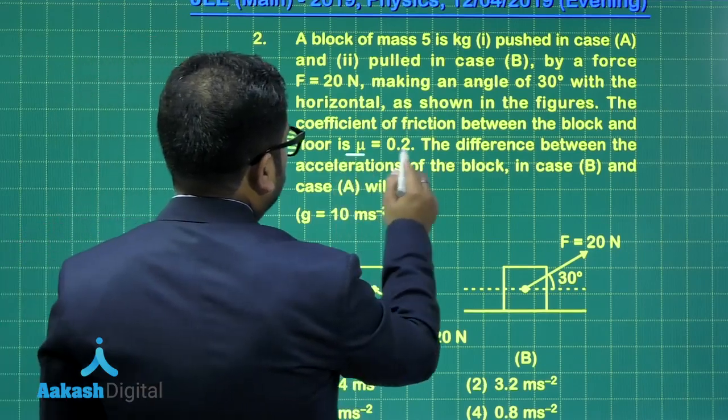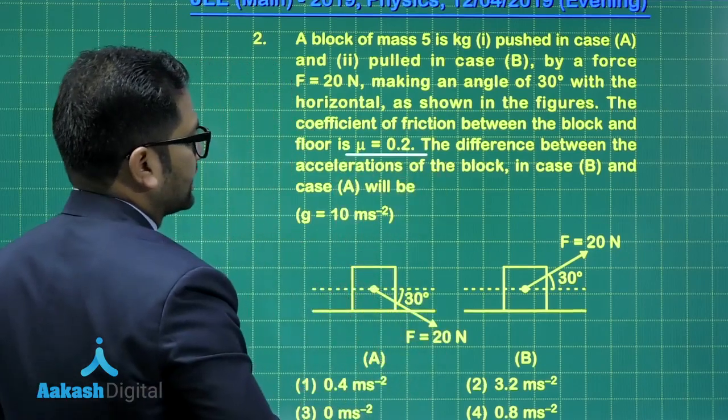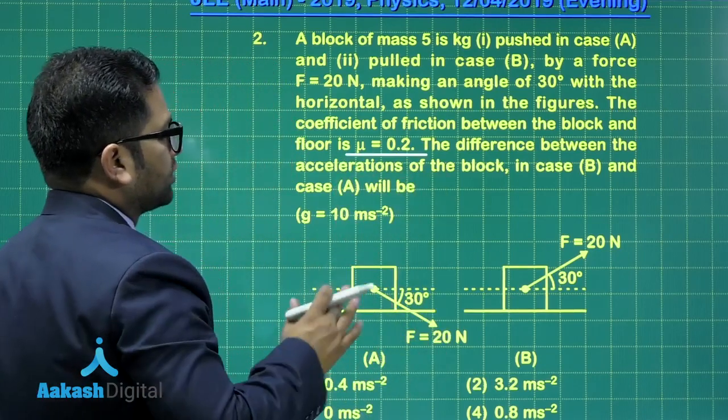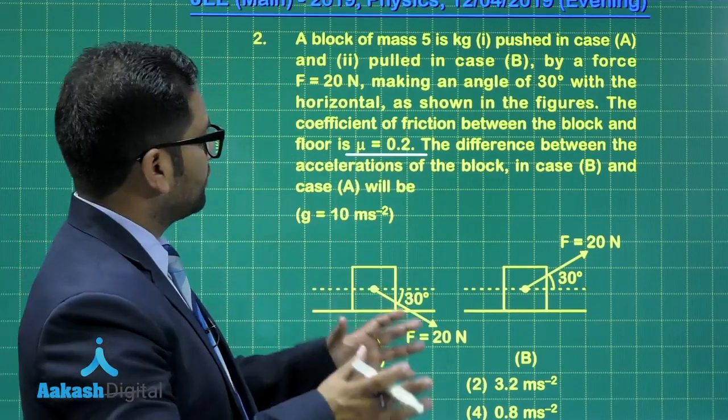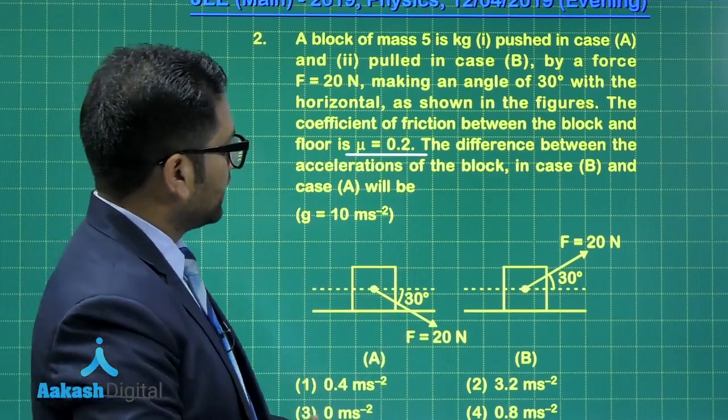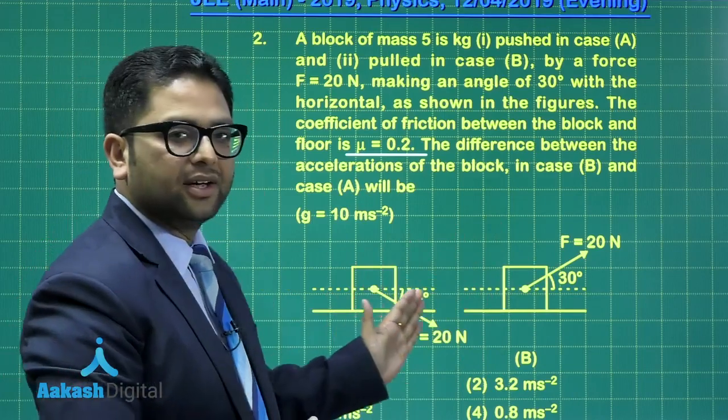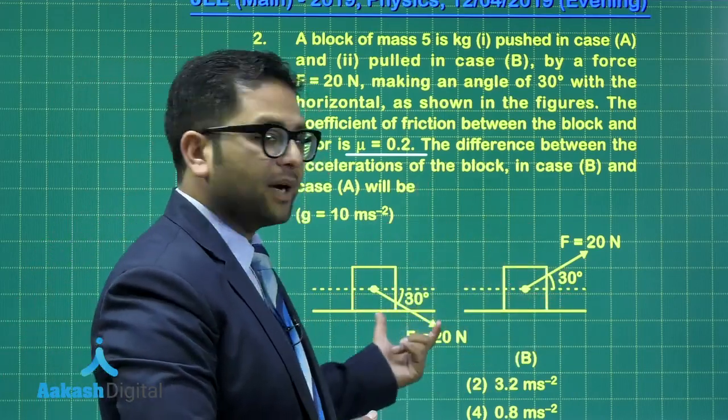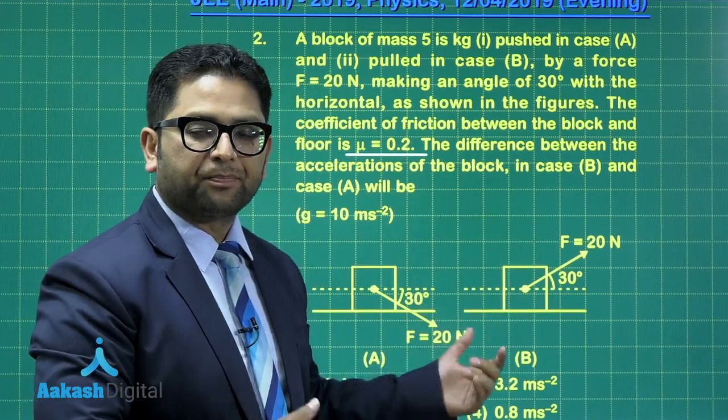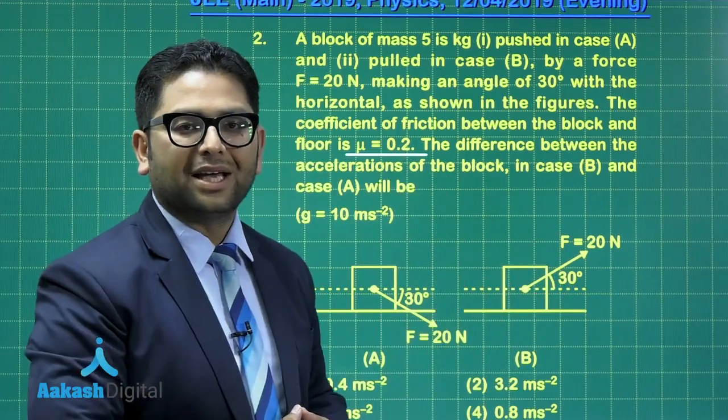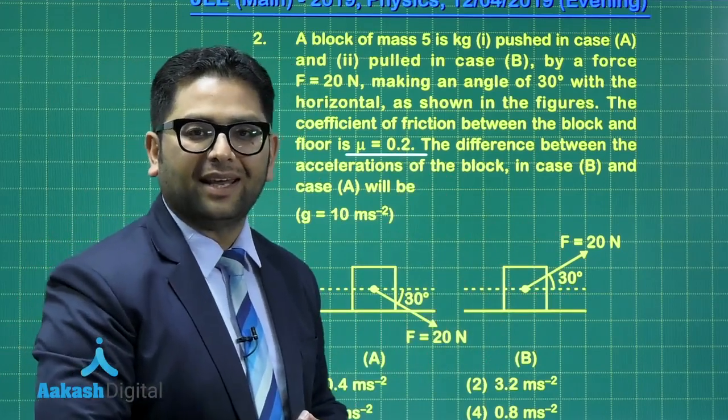The value of force is 20 Newton, the angle is the same, and in both situations the coefficient of friction is 0.2. We need to calculate the difference between the acceleration of the block in case B and case A. So if I denote it by a_b and this by a_a, the acceleration I am supposed to find is a_b minus a_a.